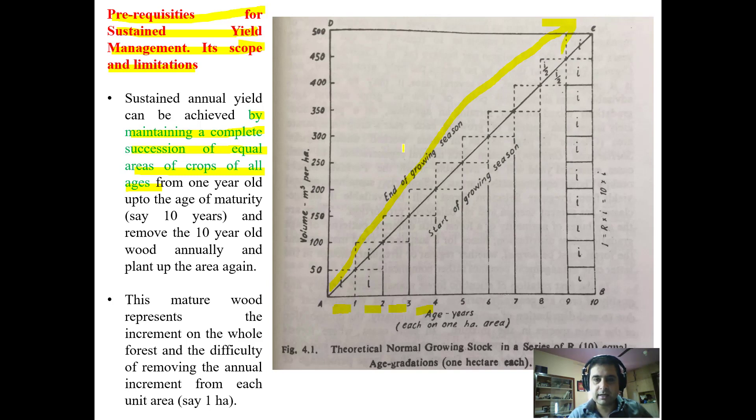If we maintain, if the species has a rotation of 10 years—now practically this 10 years may be replaced by any other species having a rotation of 20 years, say 30 years or 60 years—so the diagram in that case will change.